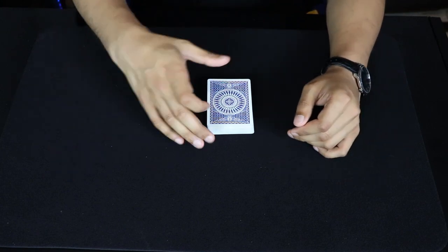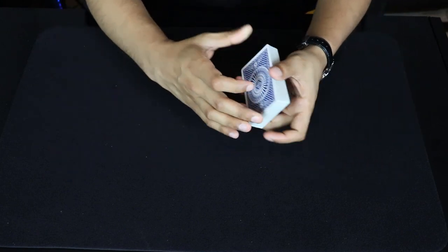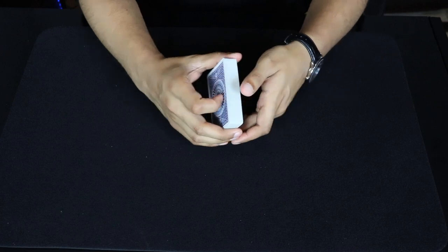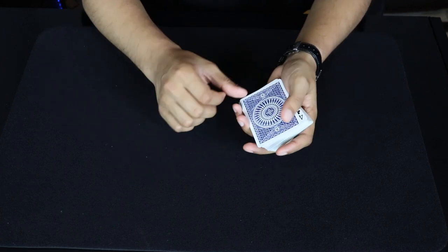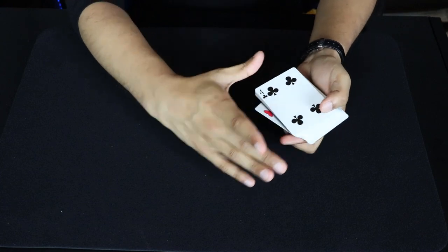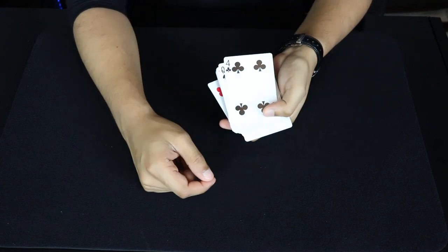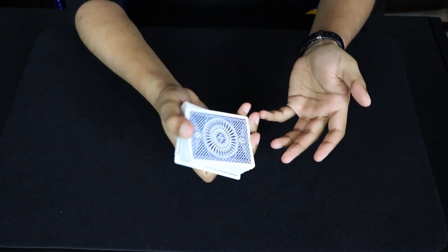Now the ending can go one of two ways. The first way is how I performed it. So the first way is called the Cardini change, where you take the top card, you're pretty much flicking the top card to here, to the side, and then you're just going to bring it down.